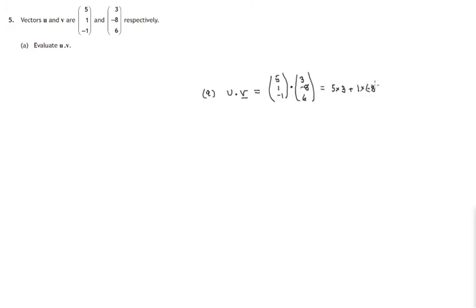Then add the two y components multiplied, 1, negative 8, and then add the two z components multiplied, negative 1 and 6. So that's 15. 1 times negative 8 is negative 8. Negative 1 times 6 is negative 6. So we're taking away 14 from 15. The result is 1. So that's the dot product of u and v.